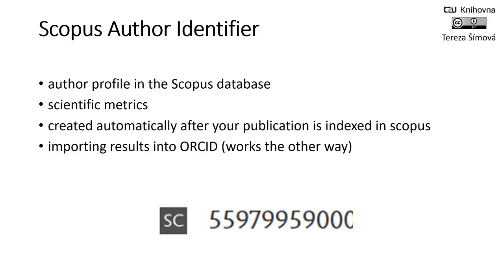Let's go through another identifier, which is the Scopus Author ID. Scopus Author ID is your author profile in the Scopus database and is an integrated part of that database. It is good to ensure that your author profile is updated because it makes it easier to identify your publications and can calculate your H-index and your citations. The Scopus author profile is created automatically after your publication is indexed in Scopus — you cannot create it yourself; it is done automatically. It is also possible to link your Scopus Author ID to ORCID and transfer data to your ORCID profile.